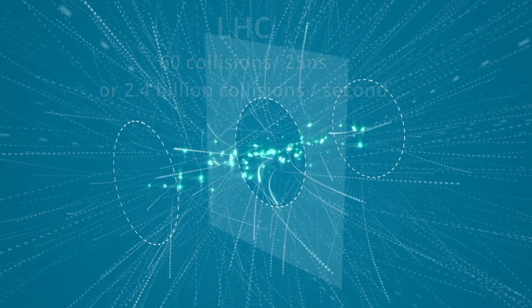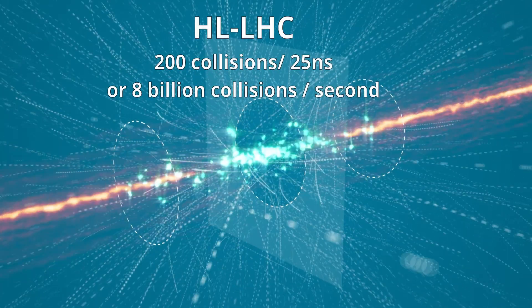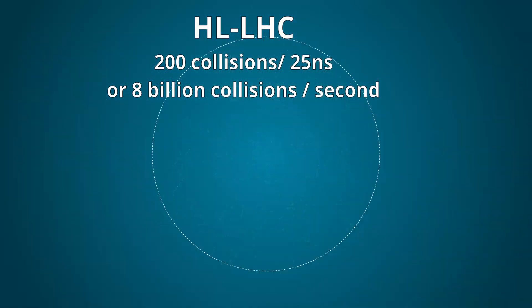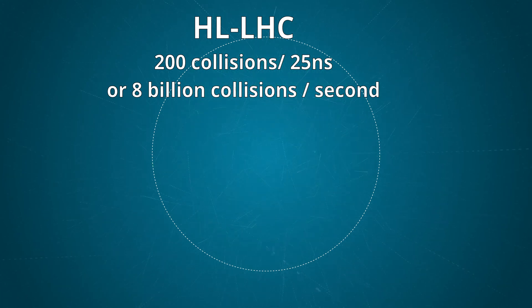For the next chapter, high-luminosity LHC or HL-LHC, the goal is to have 200 every 25 nanoseconds, or 8 billion per second.